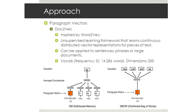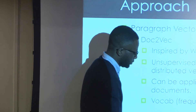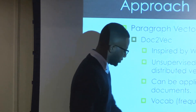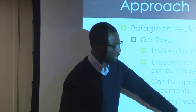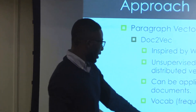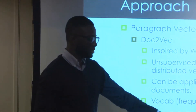Over these two diagrams are the two different implementations of Doc2Vec. With distributed memory, the first one is similar to continuous bag of words in Word2Vec. You initialize a matrix randomly for the paragraph ID, then use the context - you use 'the cat sat' and try to predict 'on' - and you keep tweaking until you have a good enough vector. The good thing about that is it keeps the context of the words in place.